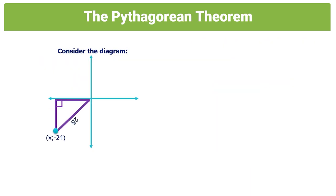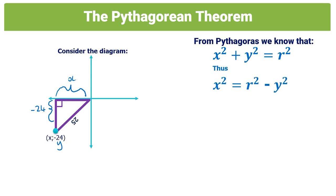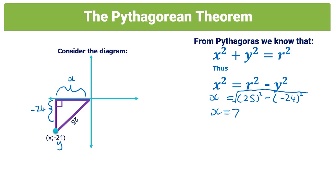For our last Pythagoras example, we're dealing with a triangle in the third quadrant. The given point is (x, −24) with radius r = 25. We rearrange to find x: x = √(25² − (−24)²). Taking the square root immediately, x = 7.